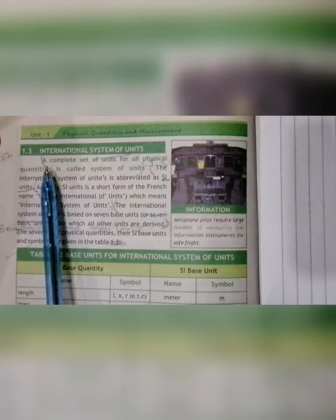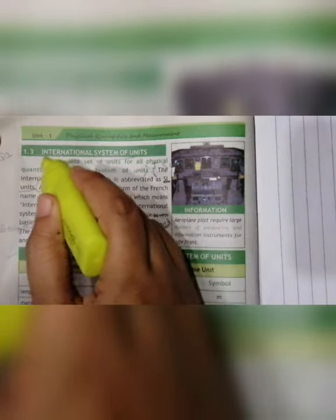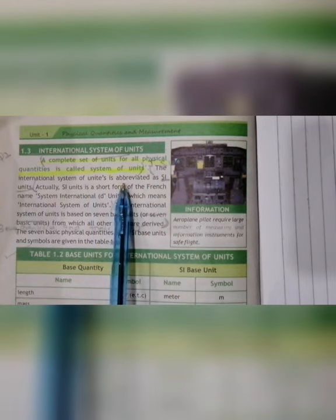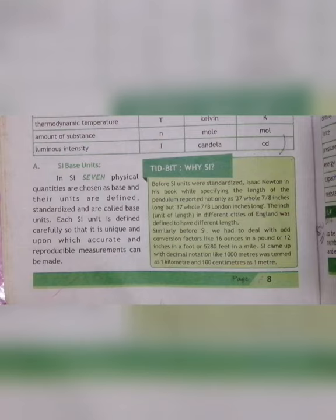The international system of units is called SI units, which is abbreviated from the French name 'Système International d'Unités', meaning international system of units. It is based on seven base units from which all other units are derived. Physical quantities are divided into two categories — base quantities and derived quantities — which have corresponding SI base units and SI derived units.